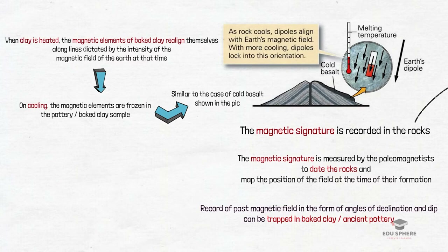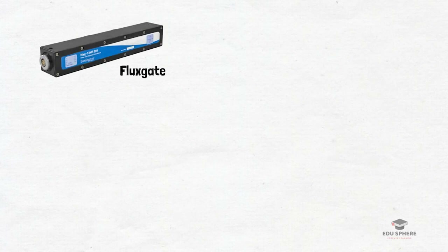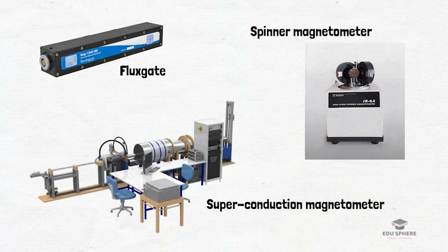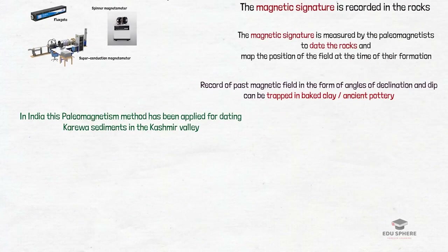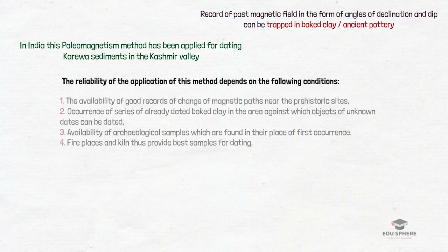When records of past angles of declination and dip have been kept, it is possible to compare the values of historic records and arrive at the date of archaeological specimens of fired clay. This magnetic remanence is measured using instruments such as a flux gate spinner magnetometer, superconducting magnetometer, and other devices. This method has been widely used in Great Britain, Japan, and Arizona. In India, this method was found effective in dating Karewa sediments of Kashmir.